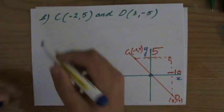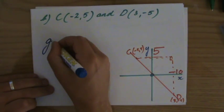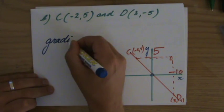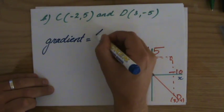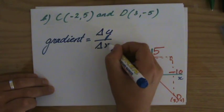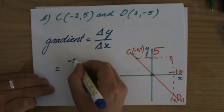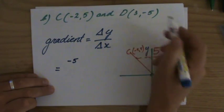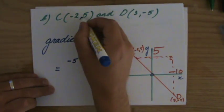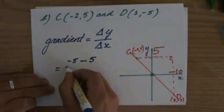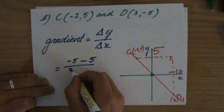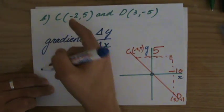But okay, we have to calculate it. We've said that the gradient is the difference in the y direction over the difference in the x direction.